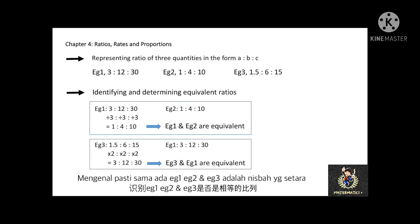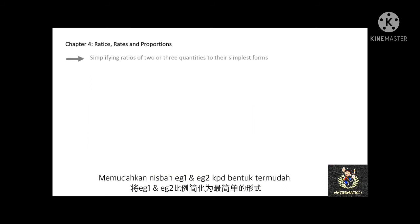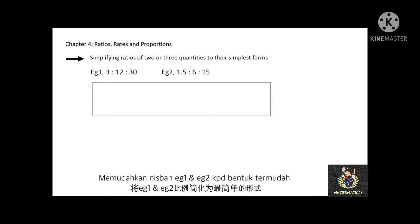On the other hand, Example 3 — 1.5 to 6 to 15 — can be multiplied by 2, giving 3 to 12 to 30, which equals Example 1. Therefore, Example 3 and Example 1 are equivalent. In conclusion, the ratios of Example 2 and Example 3 are also equivalent. For simplifying: Example 1 divided by 3 gives 1 to 4 to 10. For Example 3, since 1.5 is a decimal, divide each quantity by 1.5 to get 1 to 4 to 10 — the lowest integers.